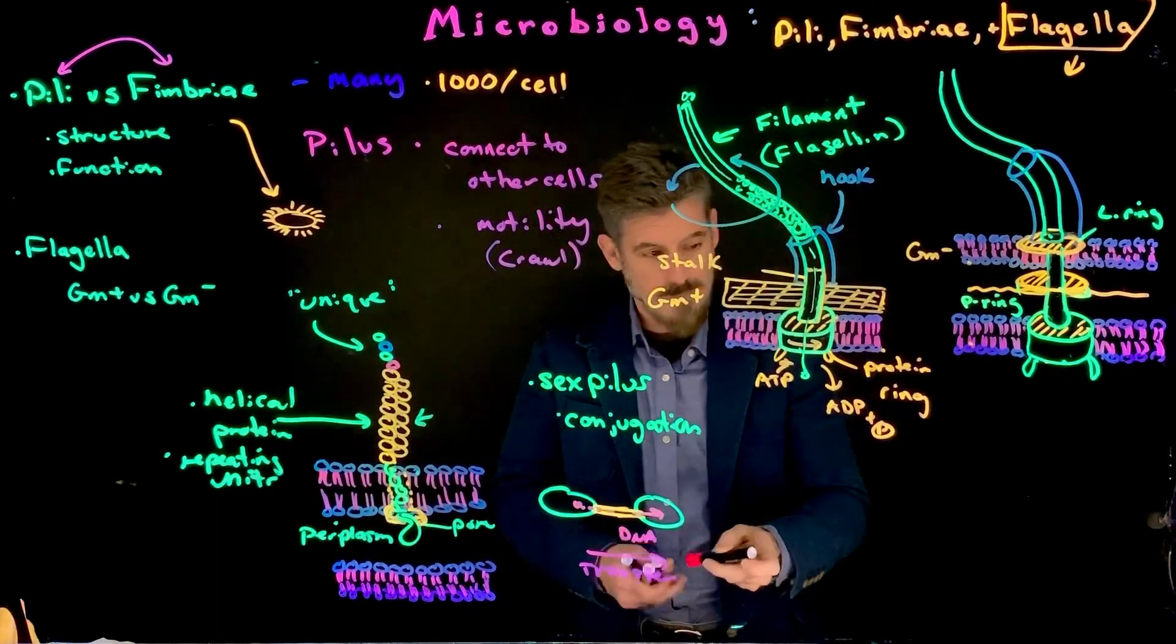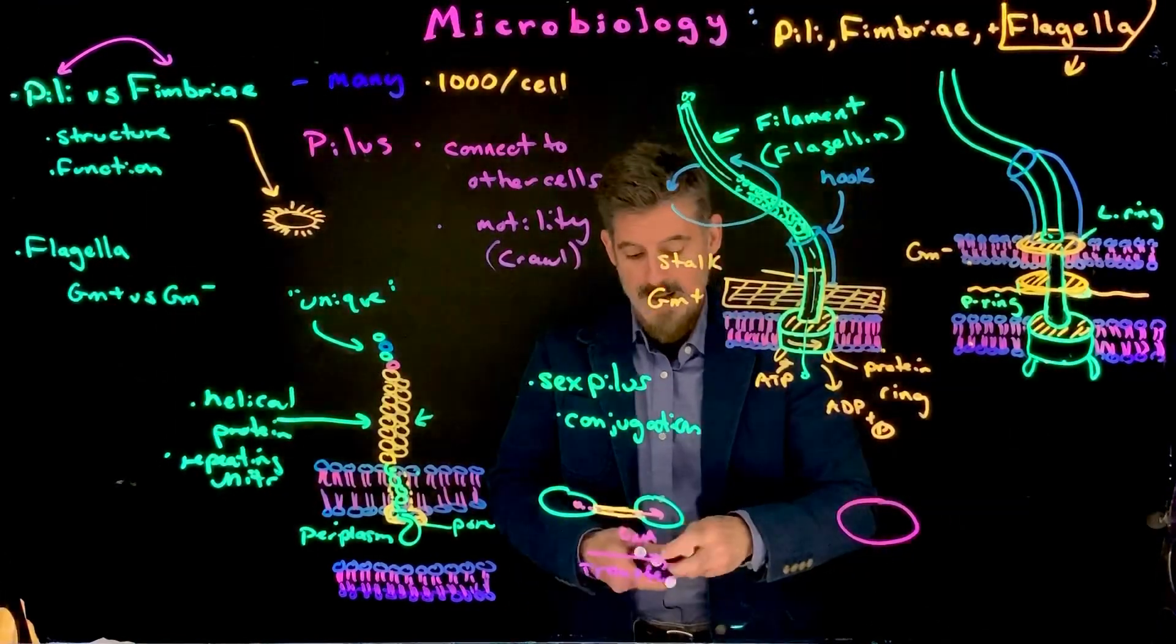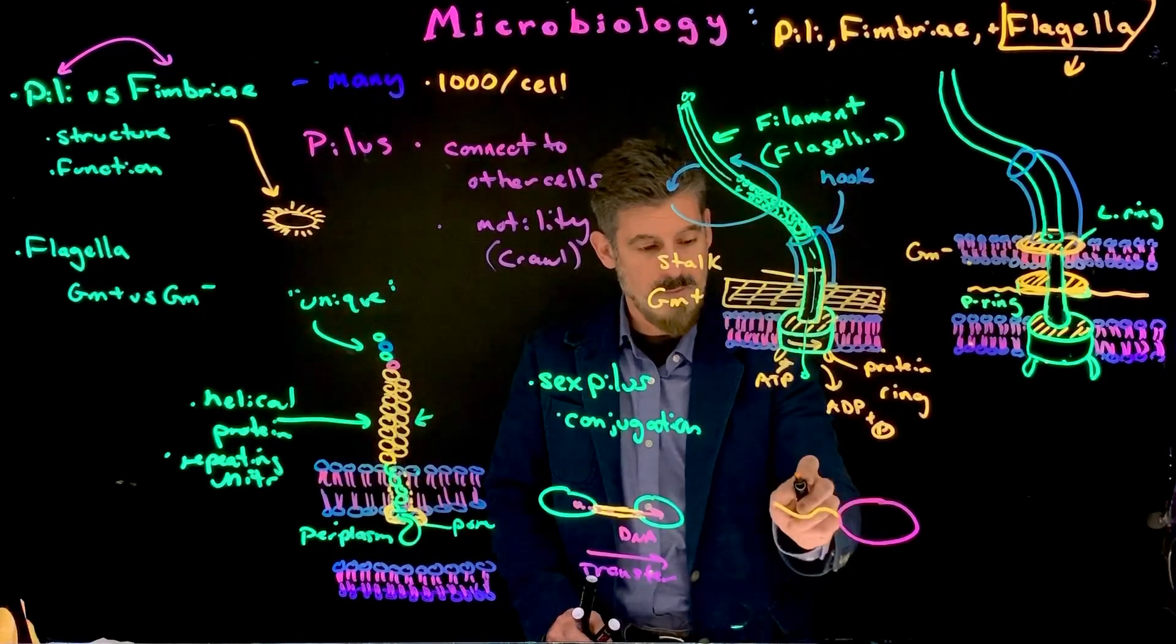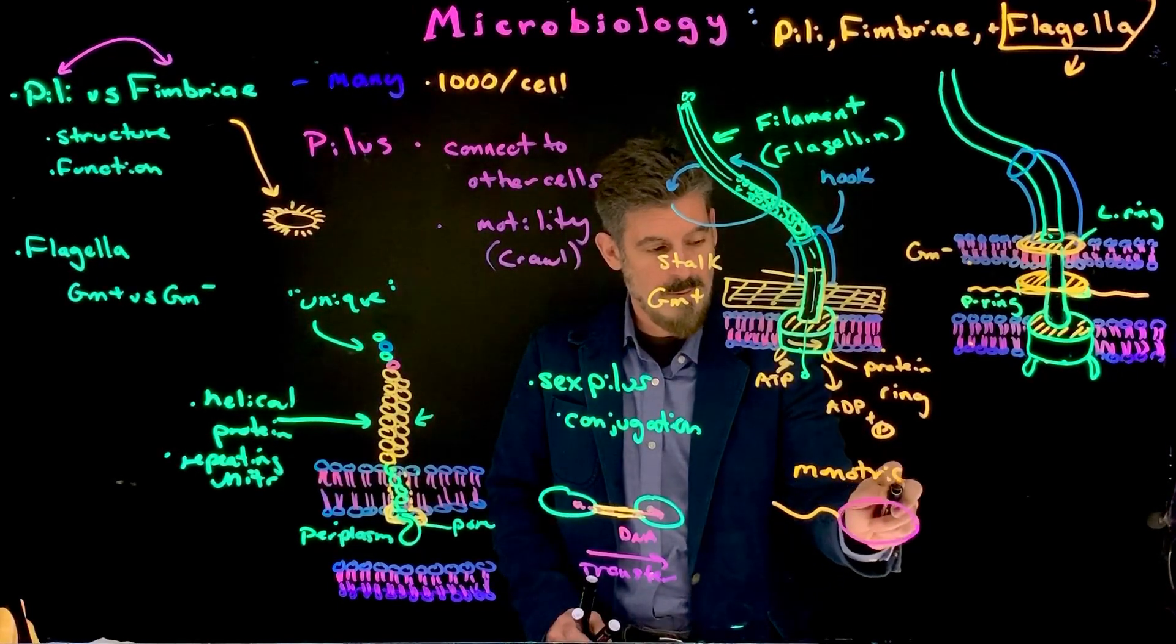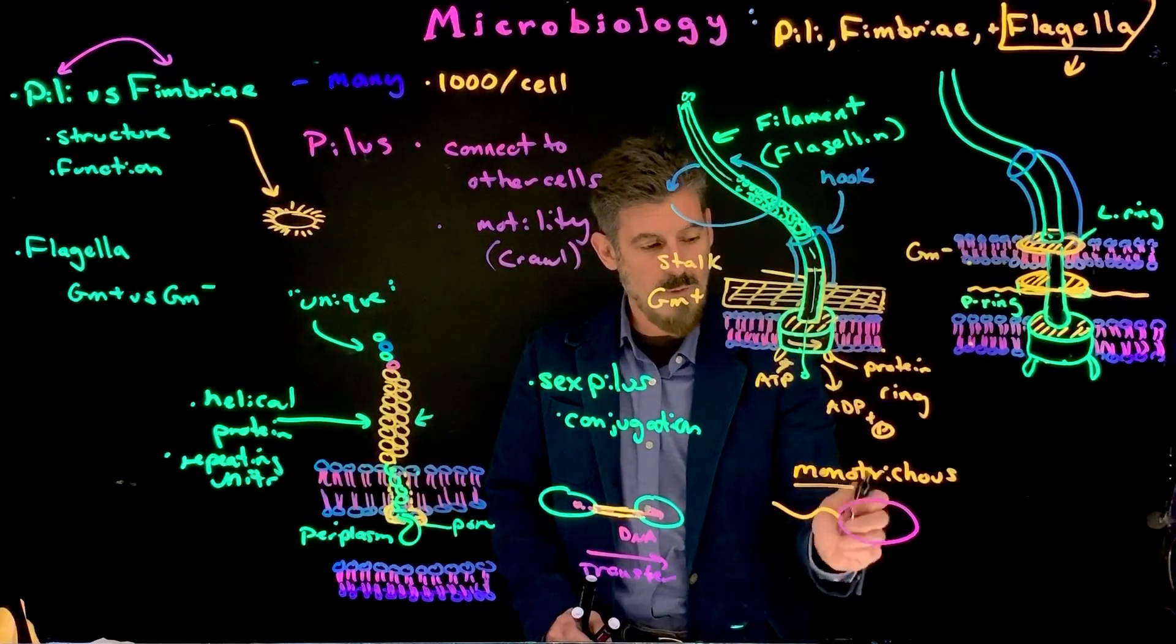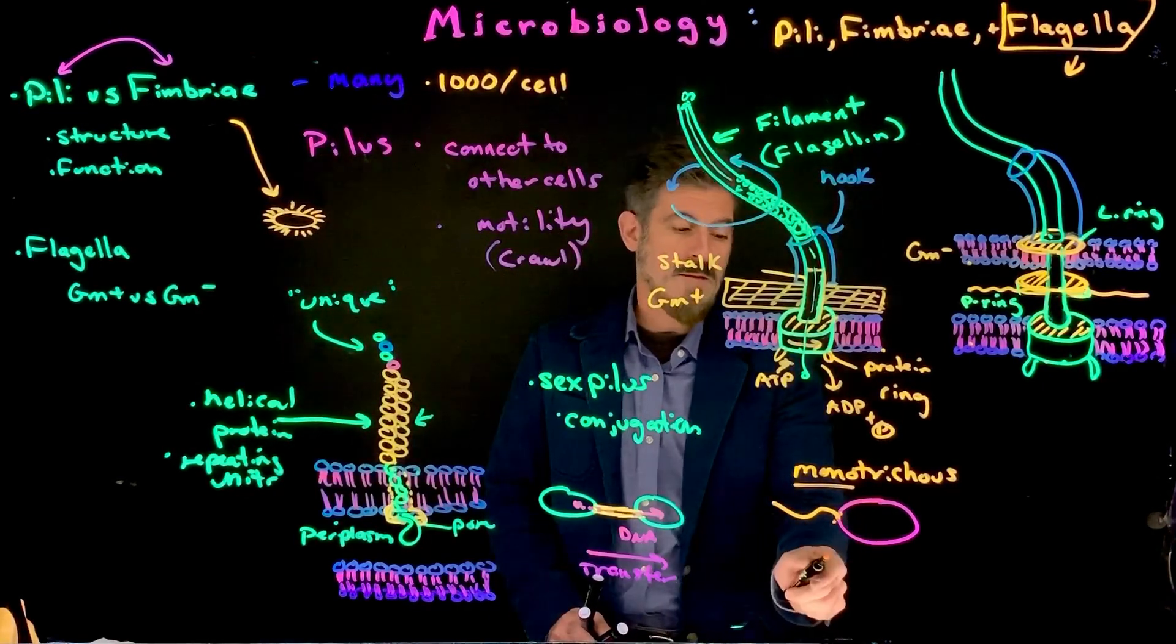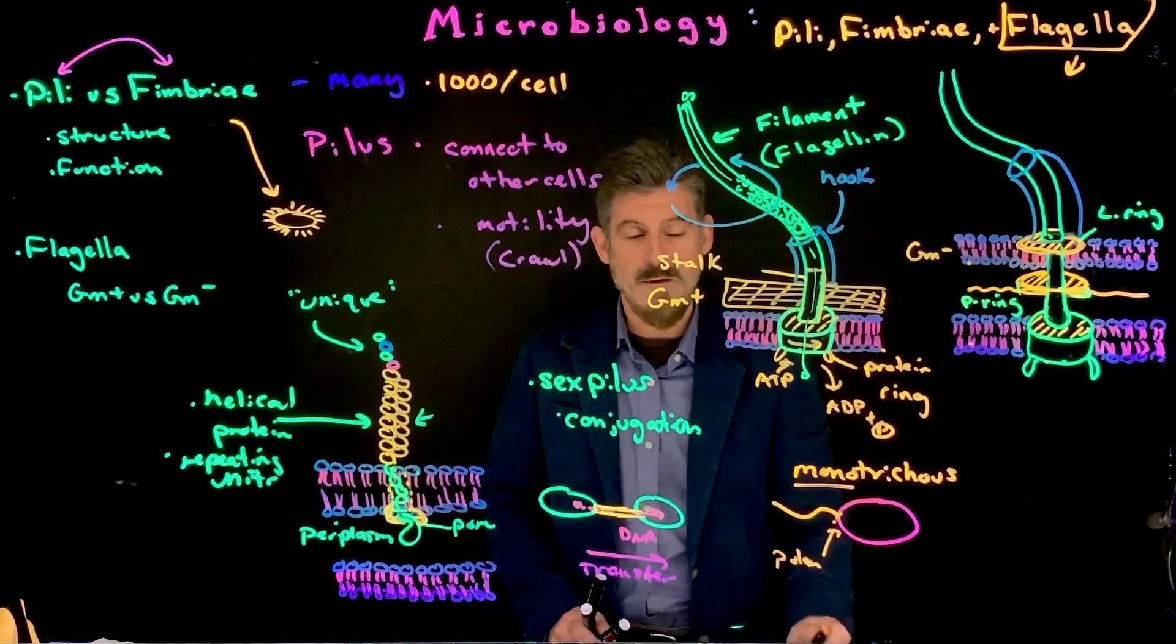Now, bacterial cells can have a single flagella, like this. That's called monotrichous, a single flagella on the cell. It's a polar flagella. Typically, it's just found at one end.